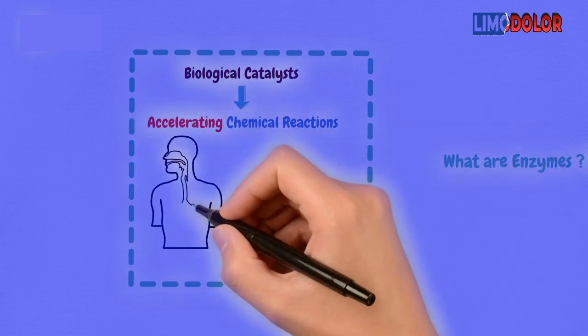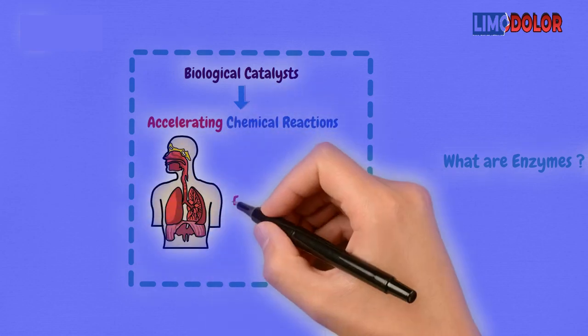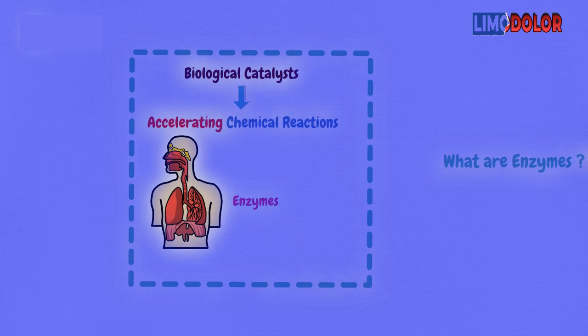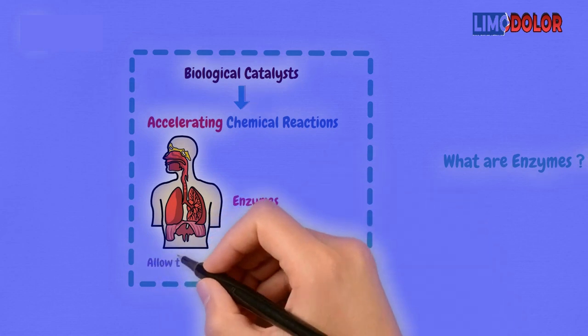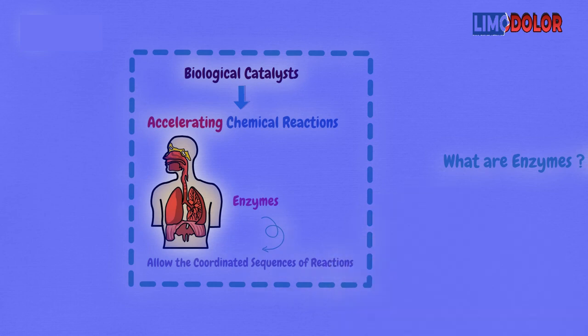Within the body, there are countless metabolic processes taking place, and enzymes play the most vital role in making sure the processes occur as genetically planned. In other words, enzymes are what allow the coordinated sequences of reactions to take place.